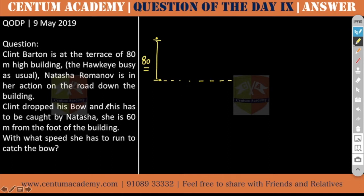Clint dropped his bow and this has to be caught by Natasha. From here the bow got dropped. The word 'dropped' indicates, implies that the initial velocity is zero. It is not thrown, it is dropped. Drop means just left.